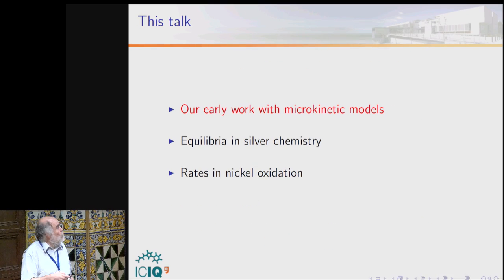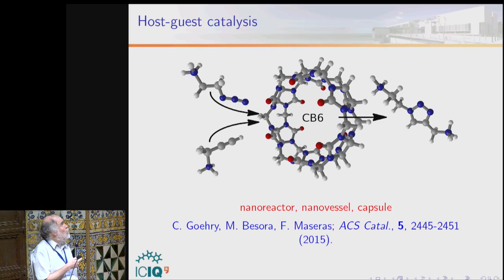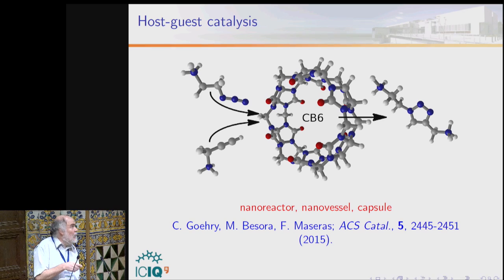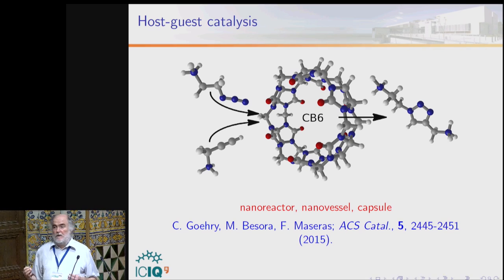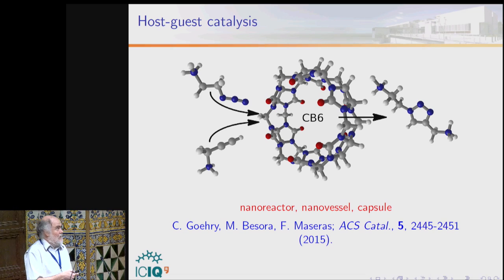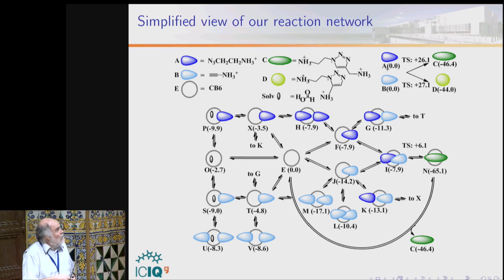After this introduction, let's move to the results in two parts: early work on microkinetic models, and then two more recent examples. The first early example is host-guest catalysis — a paper published in 2015 with Charles and Maria. This is a reaction in a nano-reactor capsule, a supermolecule where two reactants are placed and a product is formed. The two reactants are an azide and an alkyne making a triazole — a typical click chemistry reaction, but instead of being catalyzed by copper, it's accelerated by this capsule.